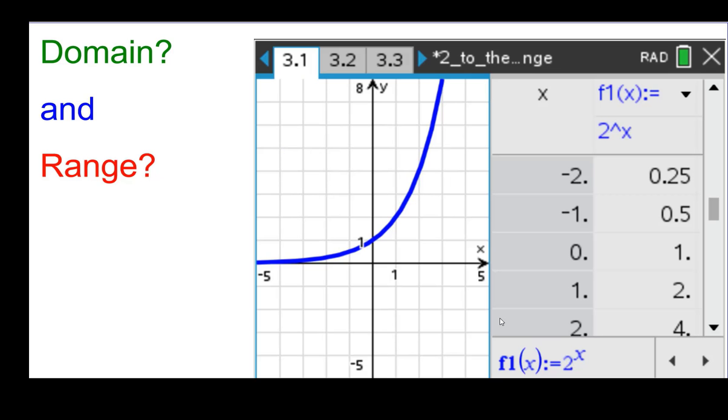Domain and range. Alright, so we have the graph in the table here. So you can see that the domain, pretty much all the real numbers along here have a point above it. So the domain seems to be all real numbers.